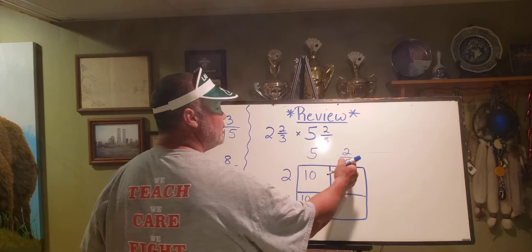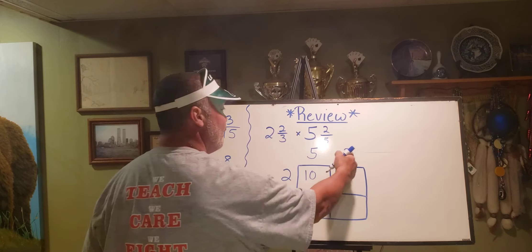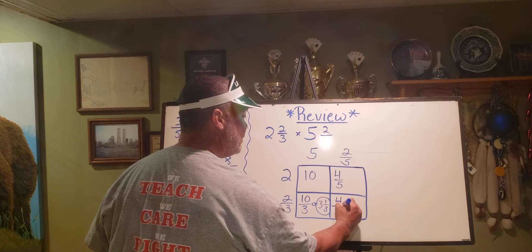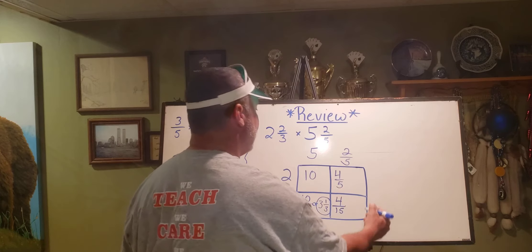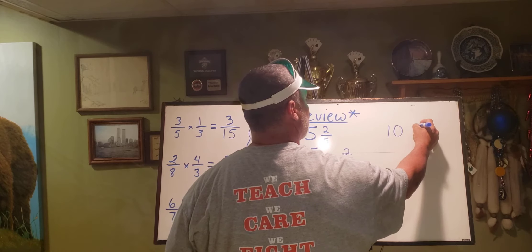And then two thirds times two fifths is exactly what we're doing here, multiplying across: four fifteenths. So now I'm going to add them all up on the side, keeping it as neat as possible. I have ten and four fifths.